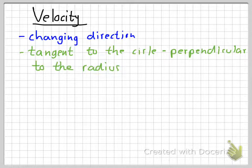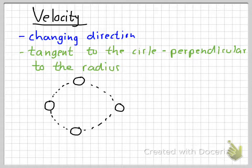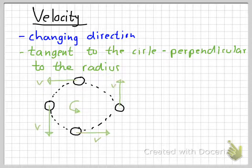That means it's perpendicular to the radius. So if we draw a diagram of that, we have something moving in a circle counterclockwise like that. At the top, the velocity is to the left. On the left side it goes down. On the bottom it goes to the right. And on the right side it goes up.